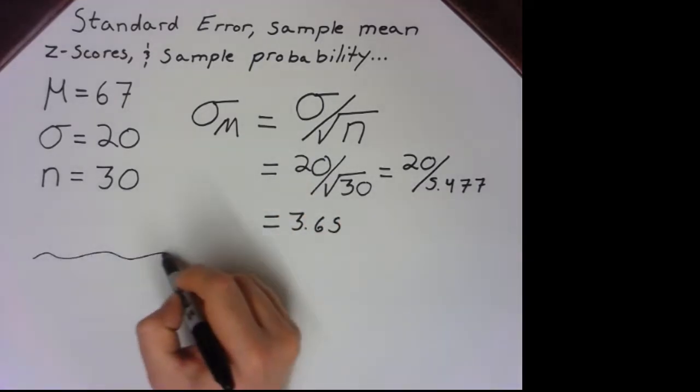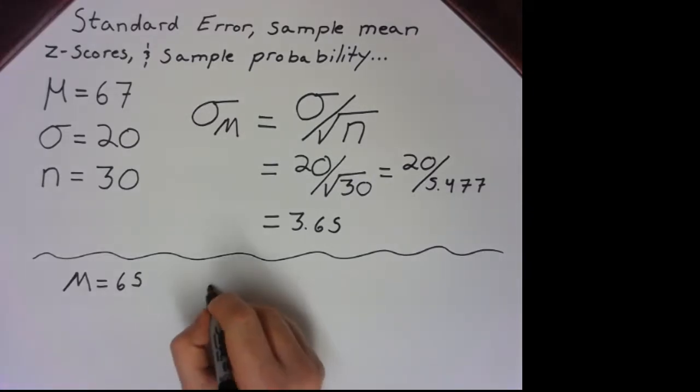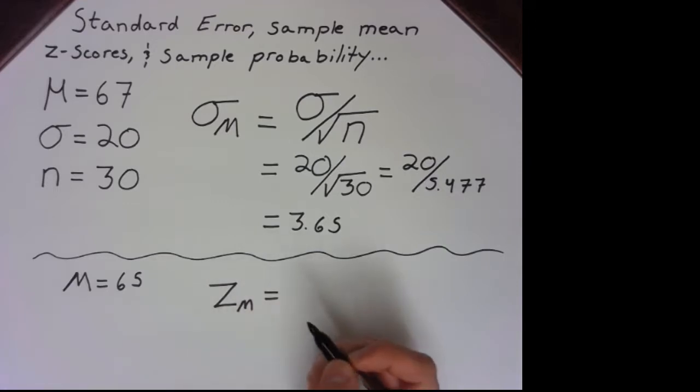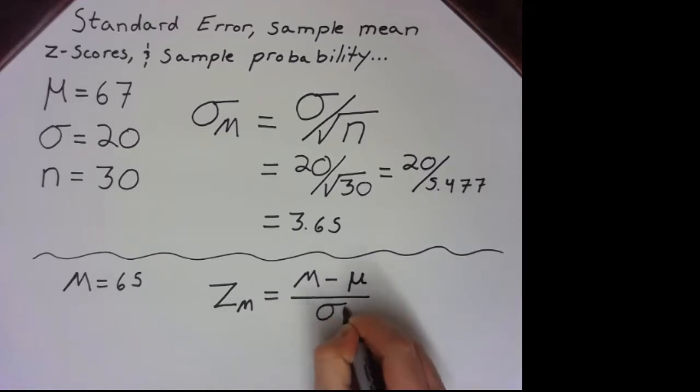Now let's say we want to find the z-score of getting a particular sample. So let's say the mean is 65 for this sample. To figure this out, we write out the formula for a z-score: the sample mean minus the population mean μ, and then divide by that standard error.